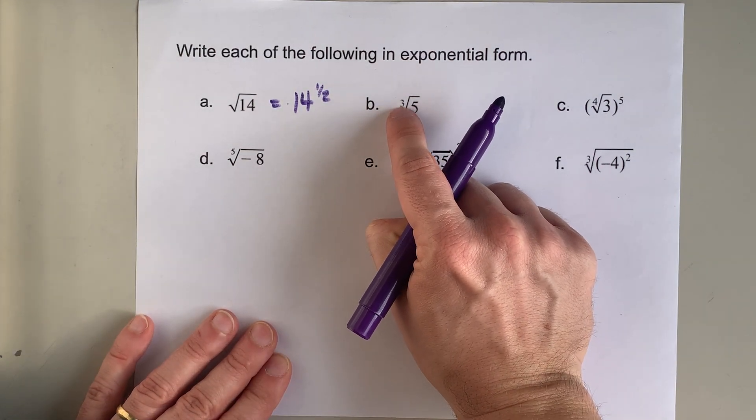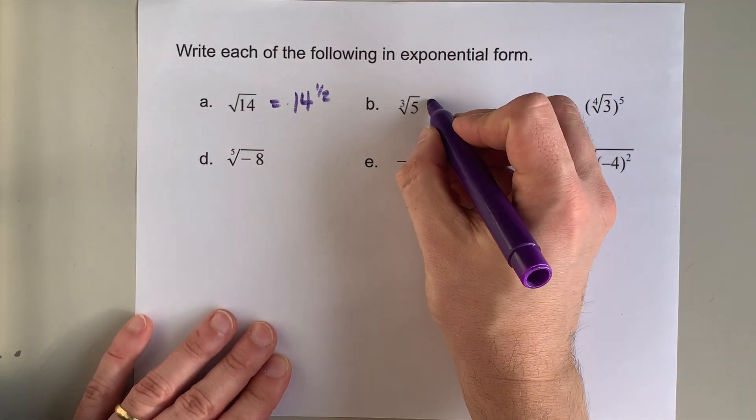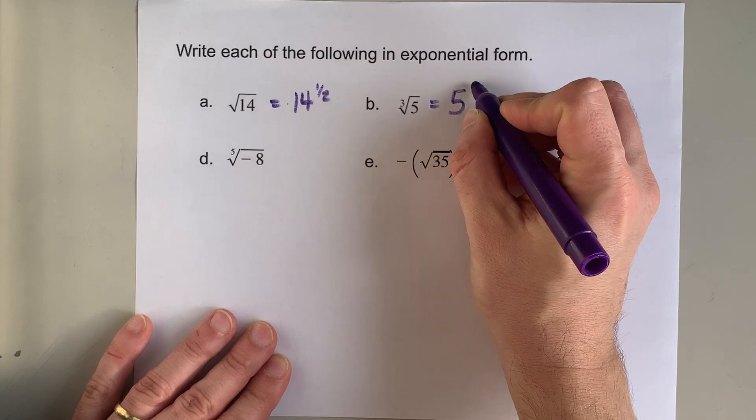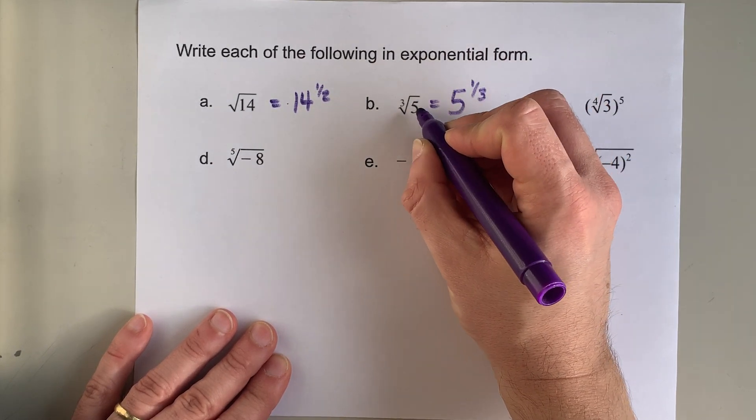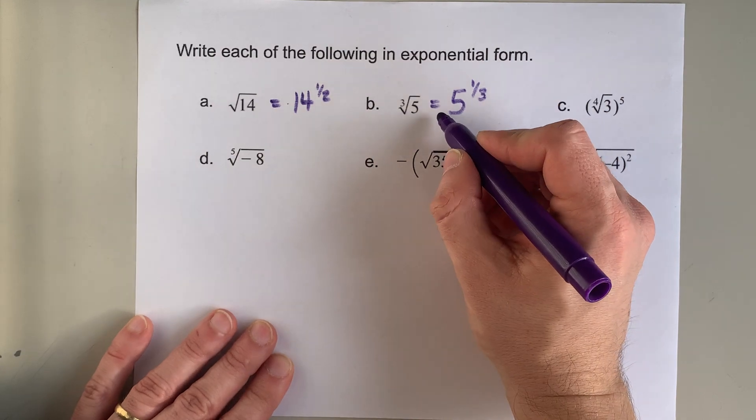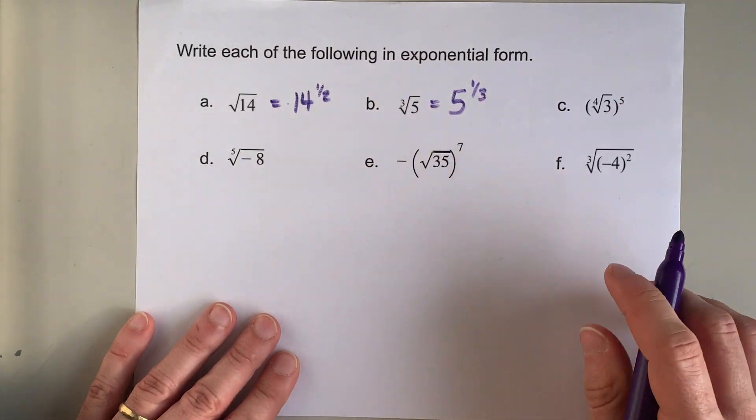Cube root, when you have a little tiny three above the number, converts to a fraction of one third. So five cube rooted is equivalent to five to the power of one third.